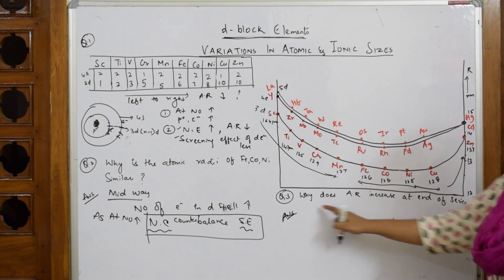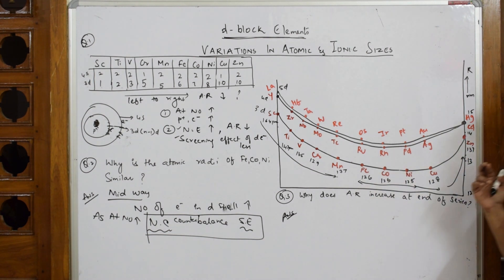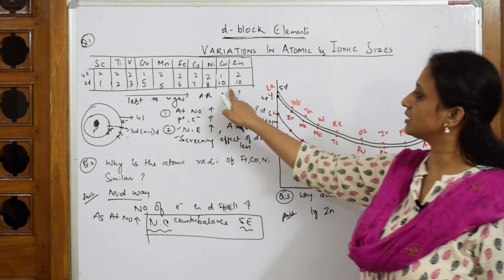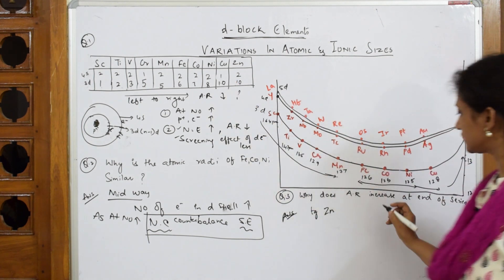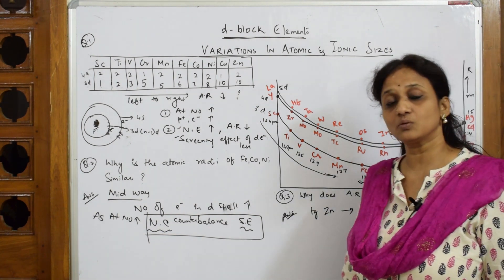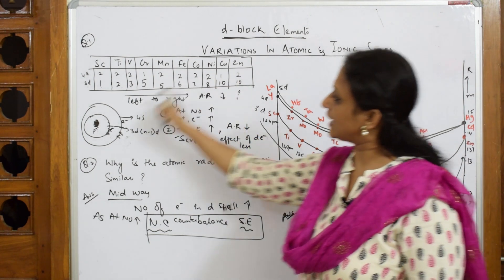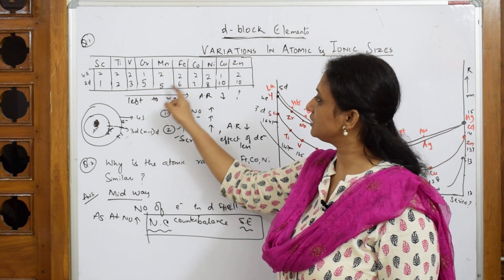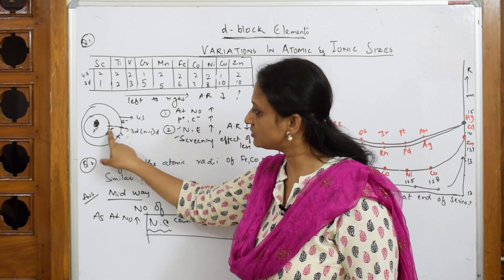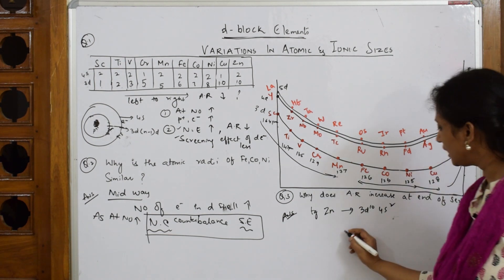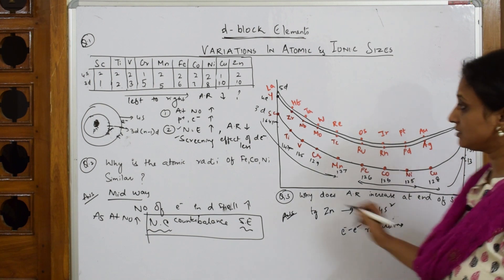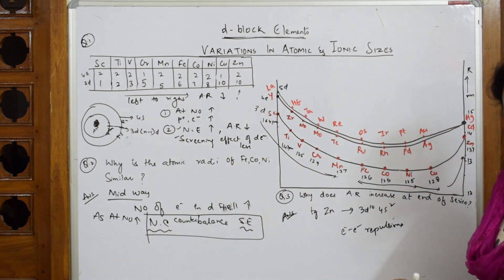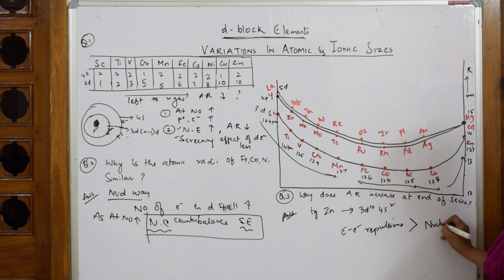Coming to the end of the series, when we reach zinc — which has a configuration of 3D10, 4S2 — the atomic radius increases to 137 picometers. The electron was going on adding and adding to the same 3D shell: 3D1, 3D2, 3D3, up to 3D10. When so many electrons are added to the same shell, electron-electron repulsion starts, which becomes greater than the nuclear charge.